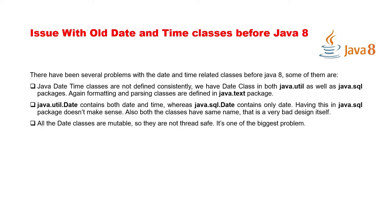The third problem is that all the date classes are mutable, so they are not thread-safe — one of the biggest problems. Classes like Date in java.util, java.sql, SimpleDateFormat, Calendar, and TimeZone are all mutable and therefore not thread-safe.